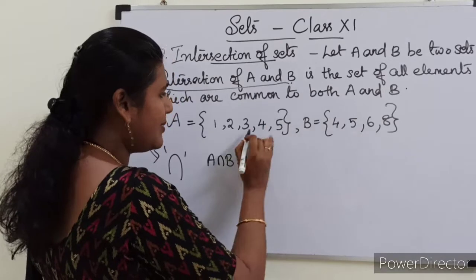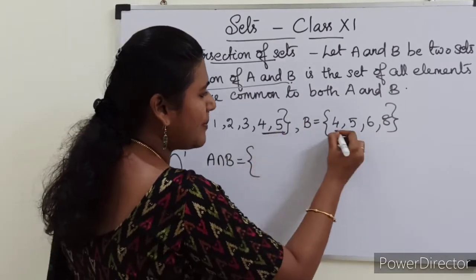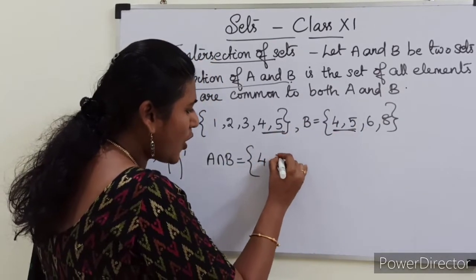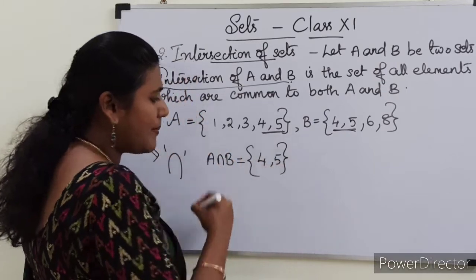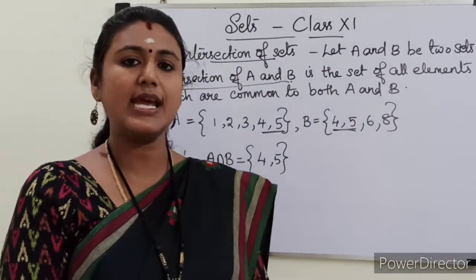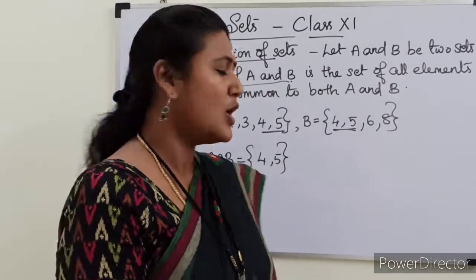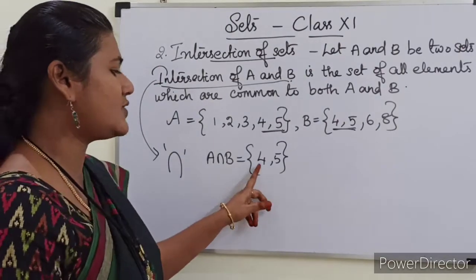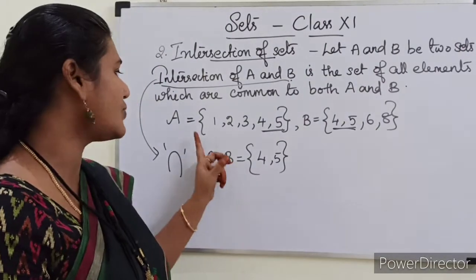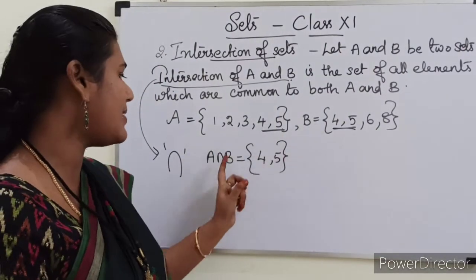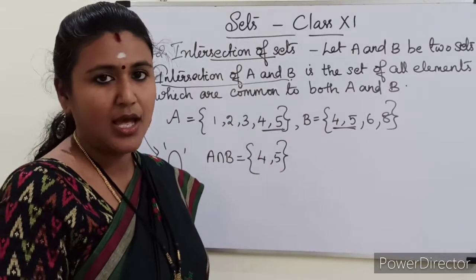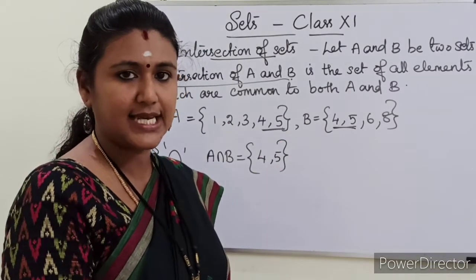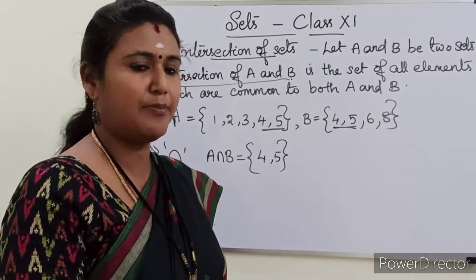So we have to check in both the sets which elements are common. Those common elements' collection is actually the intersection. So A intersection B is the set {4, 5}. The intersection of two sets A and B is the set {4, 5}. Now we will see how to represent this set in set-builder form.